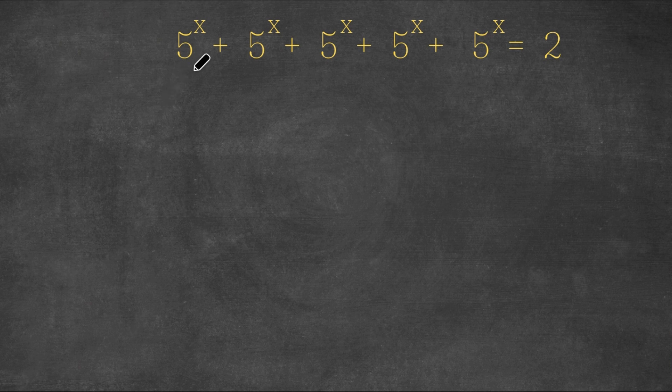We have 5 to the power of x, plus 5 to the power of x, plus 5 to the power of x, plus 5 to the power of x, plus 5 to the power of x, is equal to 2.